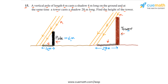If the shadows are being measured at the same time, then the sun's elevation will be exactly the same for both the pole and the tower, assuming they are nearby in the same area. This means the sun rays will form the same angle with the ground — the angle between the sun rays and the ground will be equal for both.